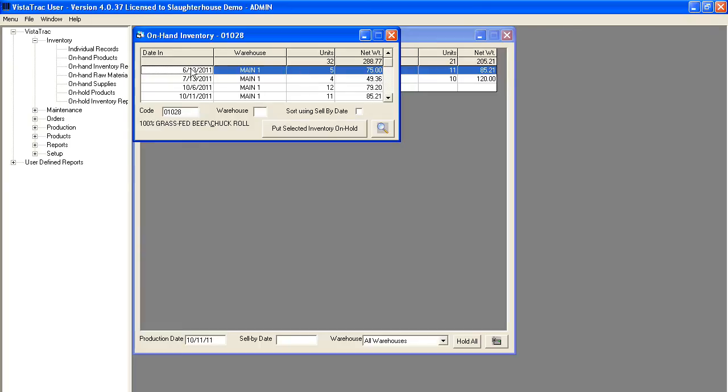We have 5 from 613, 4 from 713, 12 from 106 and 11 from 1011. We also have FIFO enforcement that we can turn on that notifies a worker when they attempt to ship a product that's not the oldest available. This helps to ensure that inventory is rotating correctly and that loss caused by spoilage or the need to freeze is eliminated.